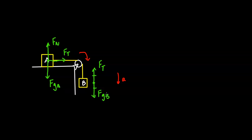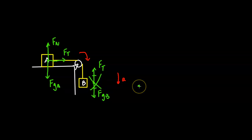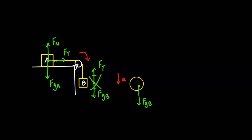If this is accelerating downward, then FT and FGB cannot be equal. If the net force is going down, then FGB needs to be bigger than FT.